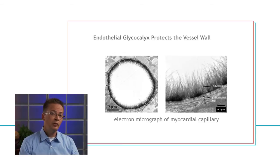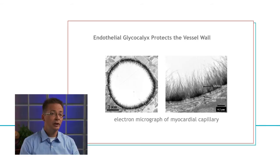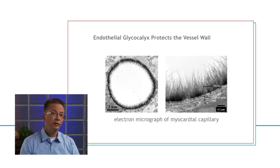The glycocalyx is produced by the vessel wall itself and consists of polysaccharides to which proteins and fluid bind, making a gel. If you look at the slide, you can see that the dimension of the glycocalyx is much larger than the thickness of the wall itself. So it forms a significant compartment shielding the vessel wall from direct contact with flowing cells and high-fat substances in the bloodstream.